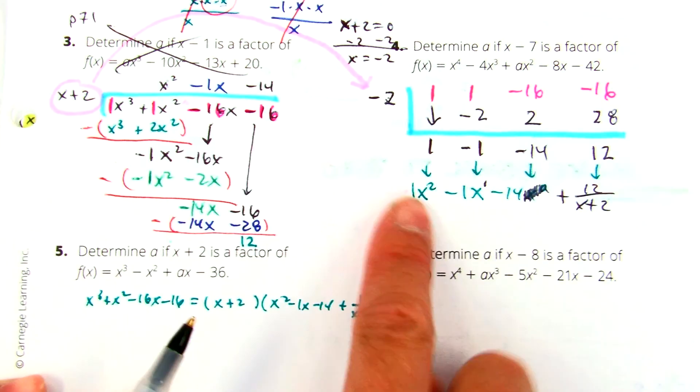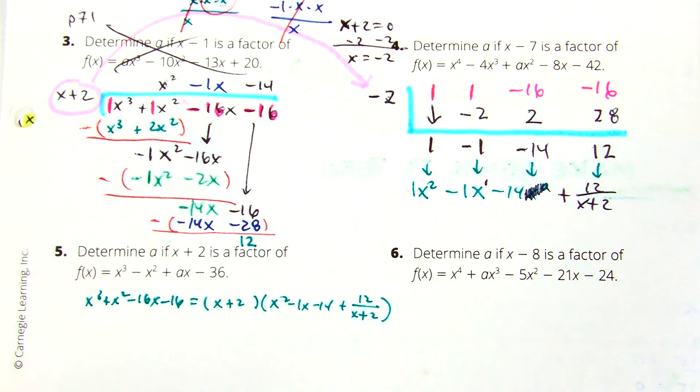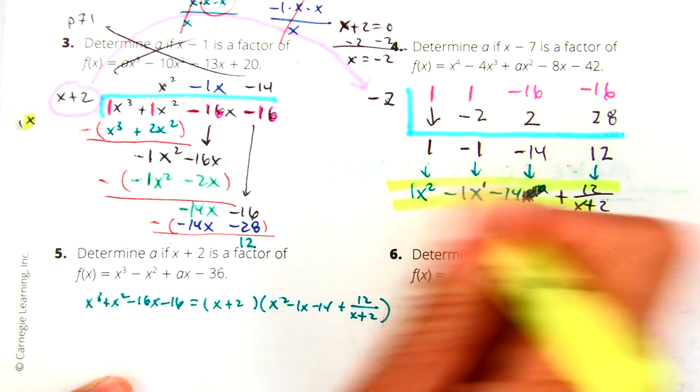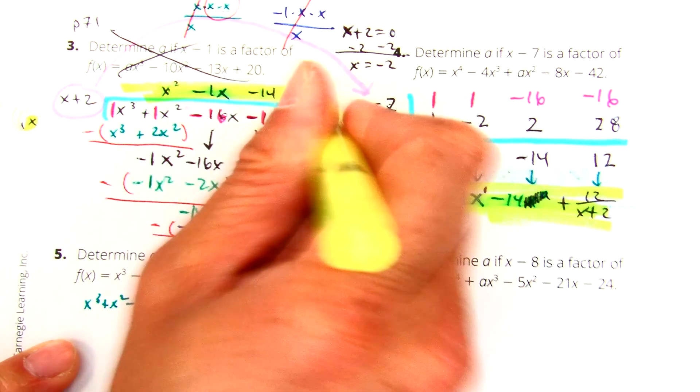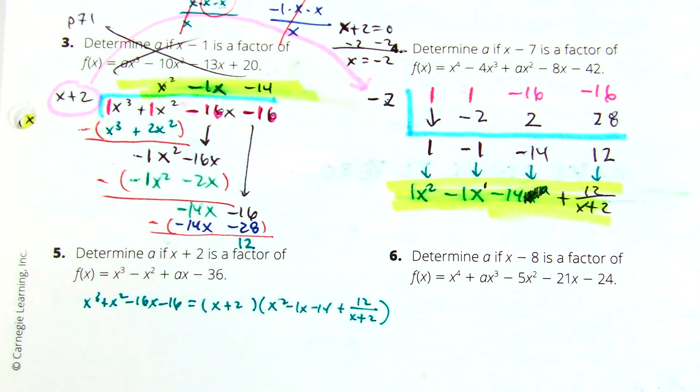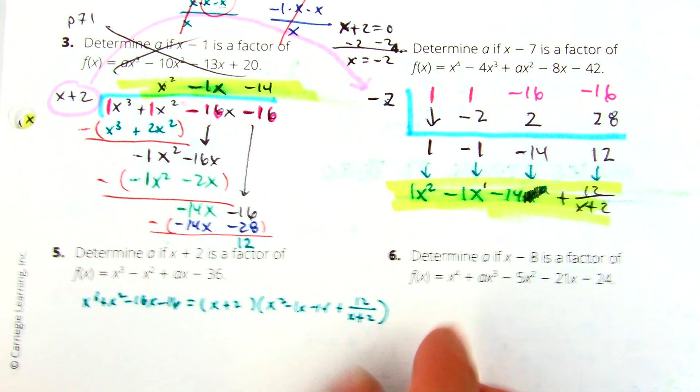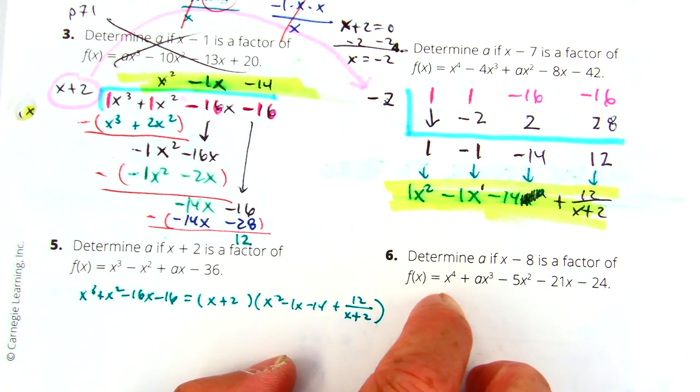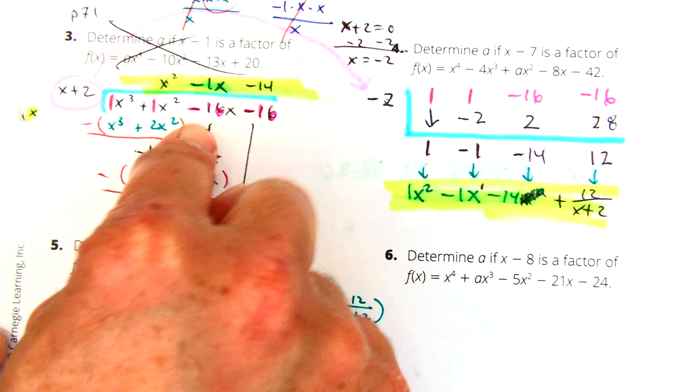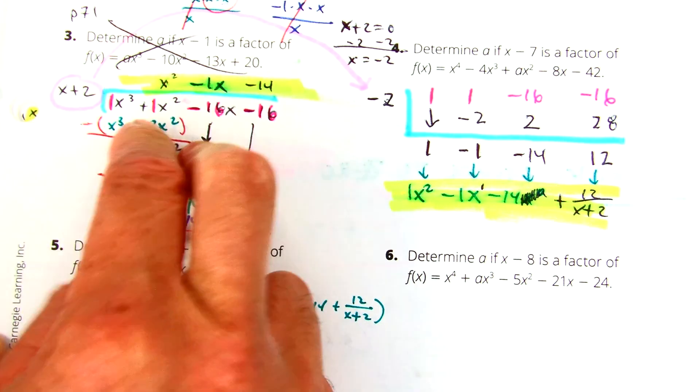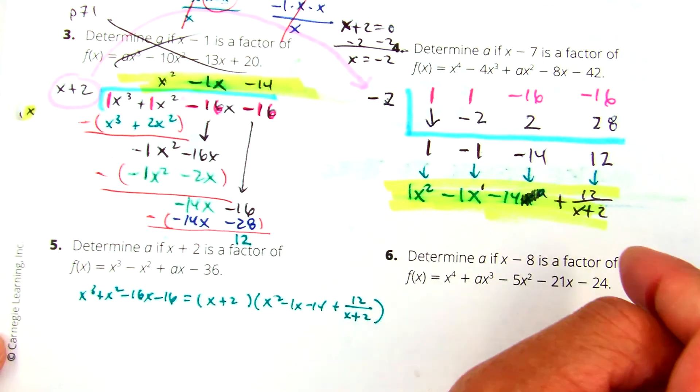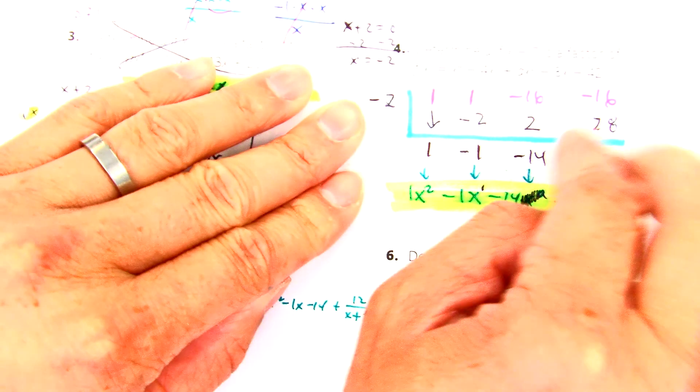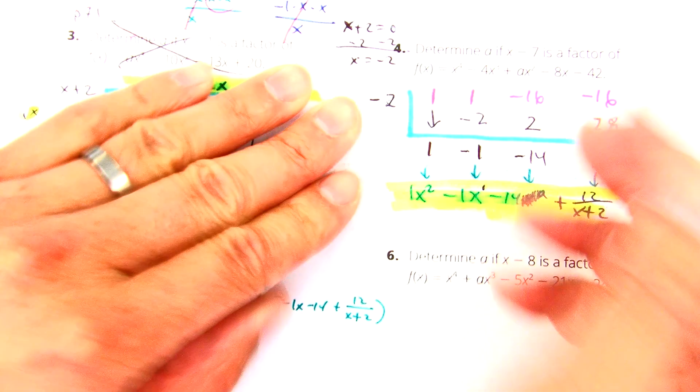So basically what we've just done is, in synthetic division, the quotient is the same thing as we have over here, right? Now, be careful on your quiz on what day? I will ask you to do both. I will ask you to show me long division, and I might ask you to show synthetic division. If I say show me long division and you do this, you will be marked incorrect. You have to show me the methods.